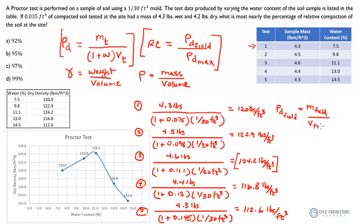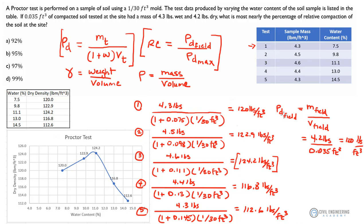The dry mass of the soil in the field was 4.2 pounds, and the volume that they examined in the field was 0.035 cubic feet. So we calculate rho sub d field and we should come up with 120 pounds per cubic foot. That's our density in the field.